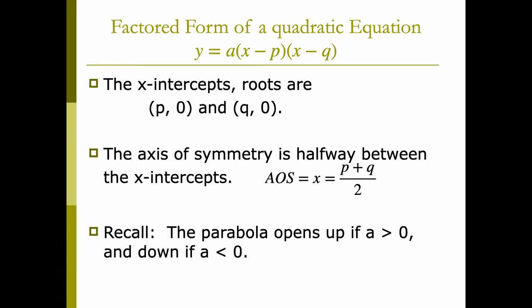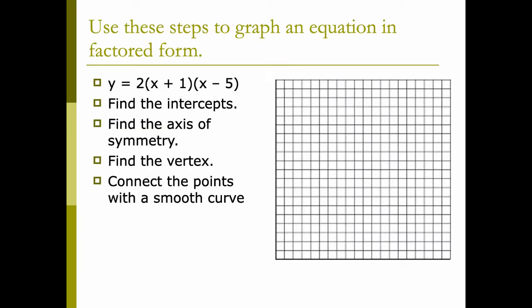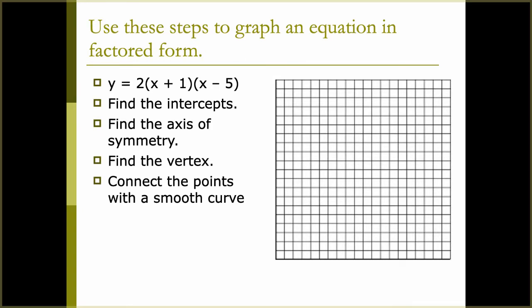So here we have y equals 2 times (x plus 1) times (x minus 5). Hopefully you notice right away that A is 2, so we know this parabola is going to open up. The steps are: find the intercepts, find the axis of symmetry, find the vertex, and then connect the points. You can pull the opposite signs out for your intercepts, or set the factors equal to 0 — whichever makes most sense. I will set them equal to 0.